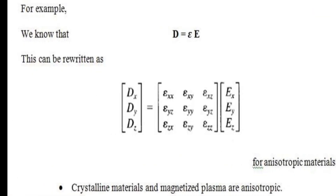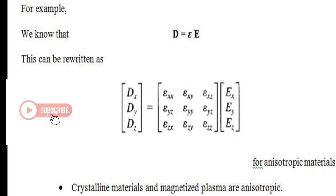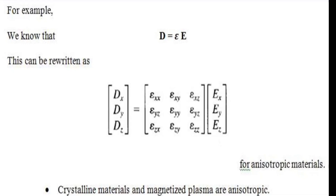We know that D = εE in general. For anisotropic materials, this equation is rewritten in matrix form, where Dx, Dy, Dz are related to a 3×3 permittivity matrix with components εxx, εxy, εxz, εyx, εyy, εyz, εzx, εzy, εzz, multiplied by Ex, Ey, Ez.